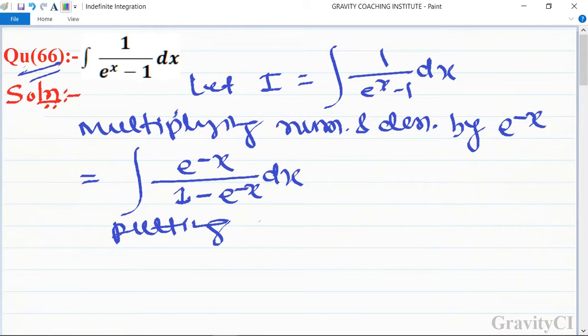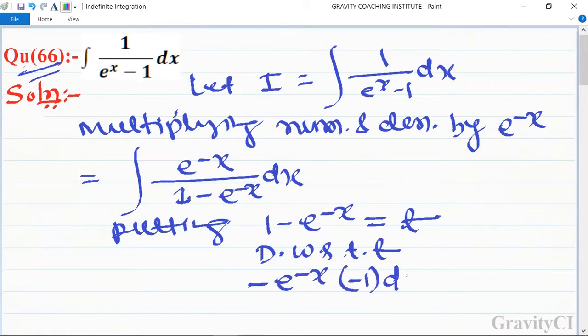We substitute 1 - e^(-x) = t. Differentiating with respect to t, we get -e^(-x)·(-1)dx = dt, which means e^(-x)dx = dt.